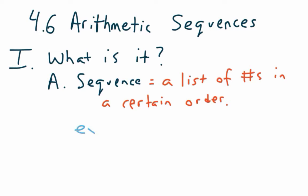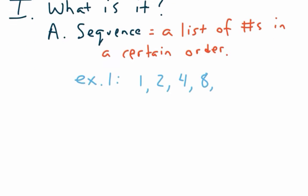Sometimes there's not. For example, my first sequence will be 1, 2, 4, 8. How are we getting from one number to the next? Multiplying by two. So this one has a rule that goes along with it.